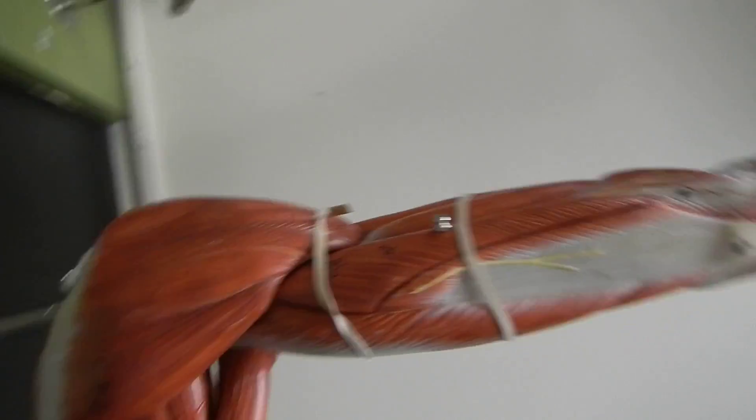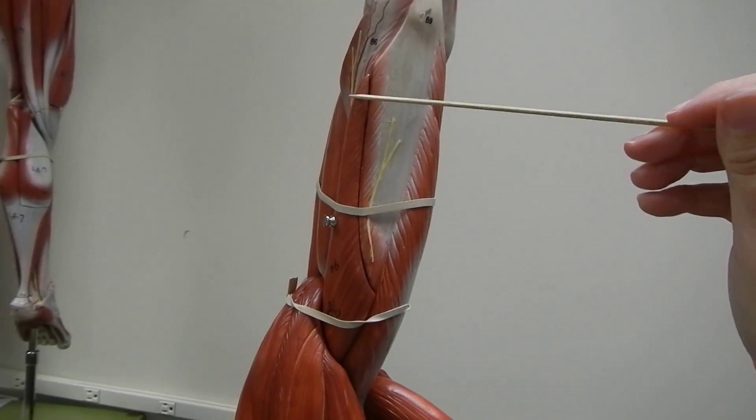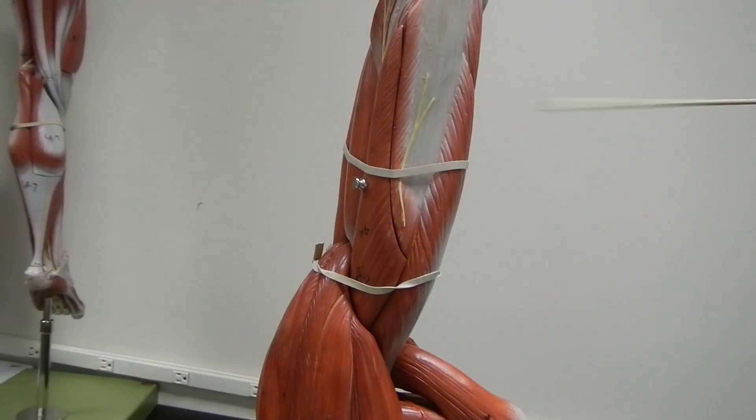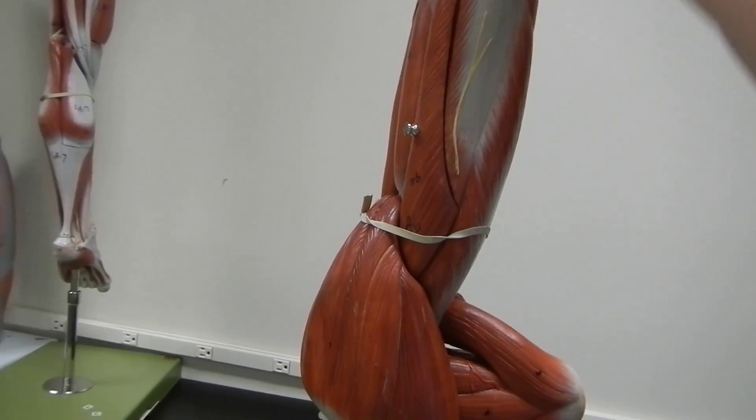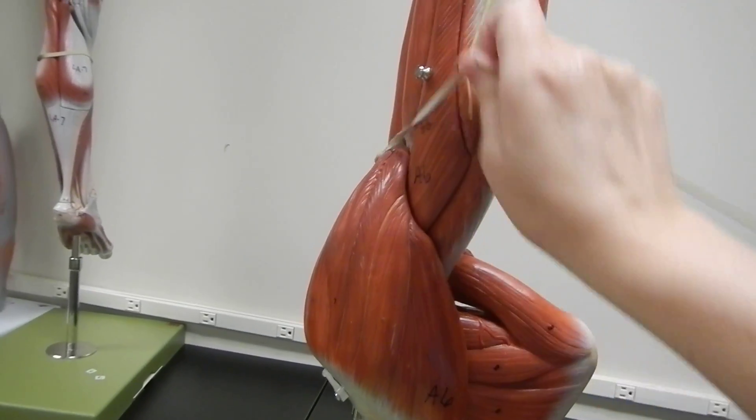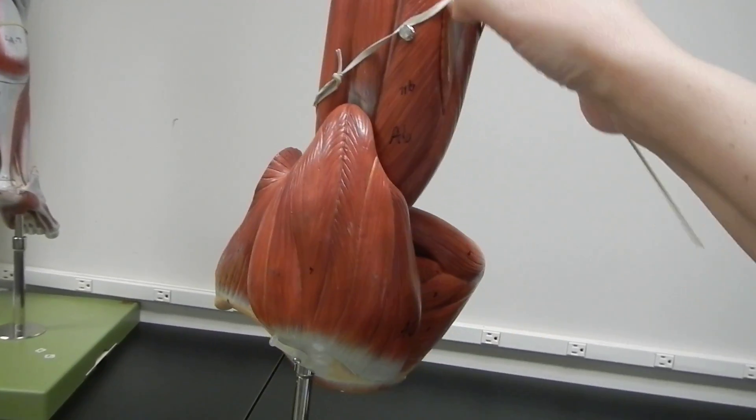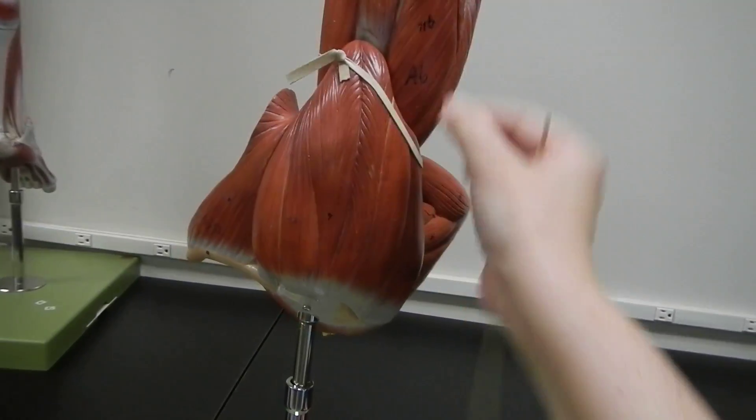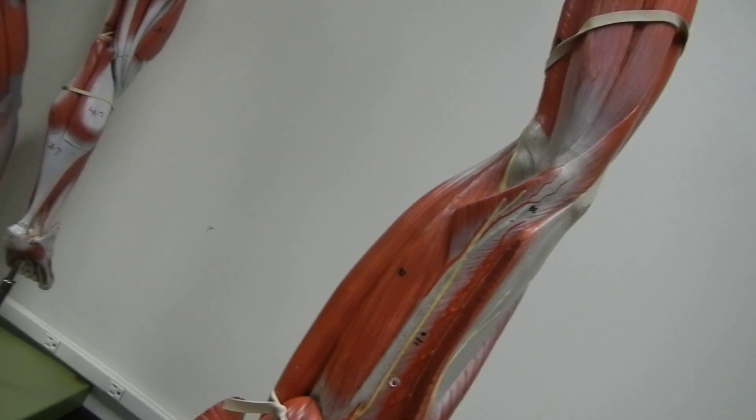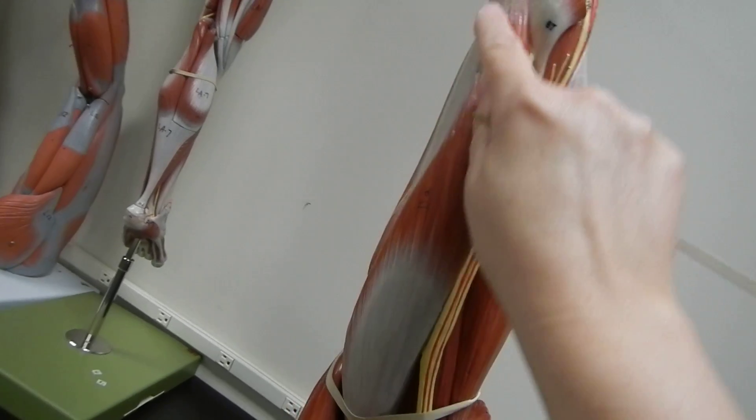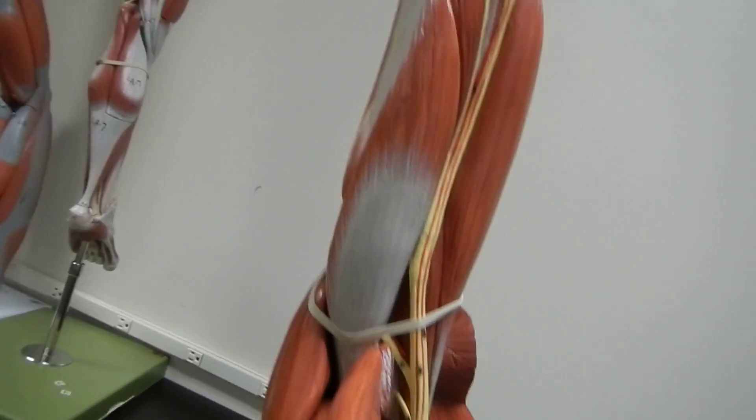It has three different heads. So this is the lateral head. This right here is the long head. When you remove those, this might come flying out. Let's see. Nope. So underneath in here, and additionally, this small little piece is the medial head.